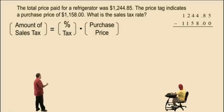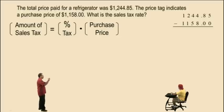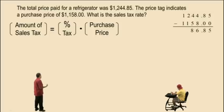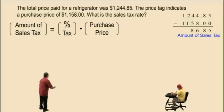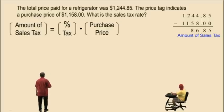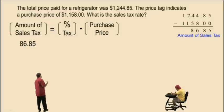If we take the difference of those two amounts, that will give us the amount of sales tax. So we take $1,244.85 and subtract $1,158.00 — that's the price paid at the register minus the purchase price — and that gives us $86.85, which is the amount of sales tax.